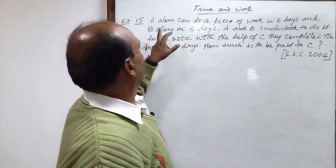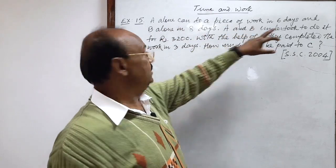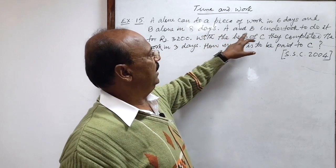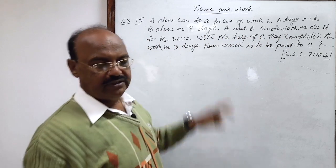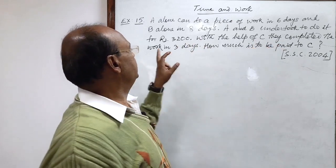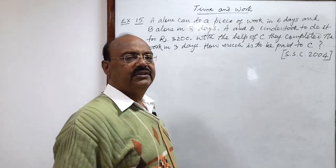Here question is: A alone can do a piece of work in six days and B alone in eight days. A and B undertook to do it for rupees 3200. With the help of C they completed the work in three days. How much is to be paid to C?